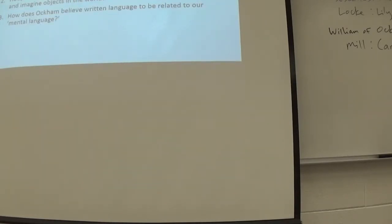Now, those of you who are working on William of Ockham, your reading is on logic. First, what does Ockham have to say about the relationship between universals and particulars? And how does this affect his view of language use? How, according to Ockham, is the human intellect able to perceive and imagine objects in the world? And finally, how does Ockham believe mental language to be related to our written language? Am I okay to move on?